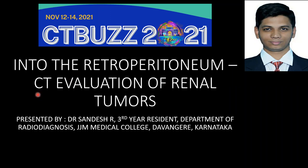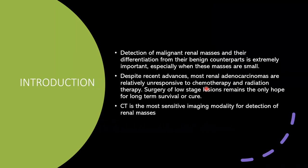Into the retroperitoneum: CT evaluation of renal tumors. Detection of malignant renal masses and their differentiation from benign counterparts is extremely important, especially when these masses are small. Despite recent advances, most renal adenocarcinomas are relatively unresponsive to chemotherapy and radiation therapy. Surgery of low-stage lesions remains the only hope for long-term survival and cure. CT is the most sensitive imaging modality for detection of renal masses.